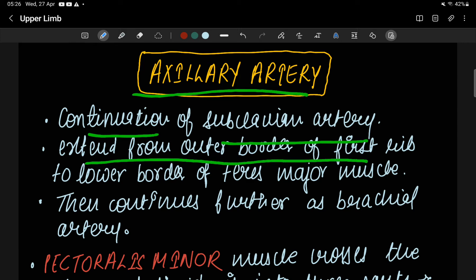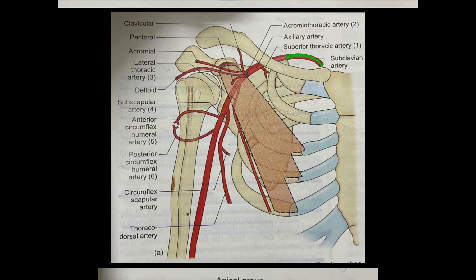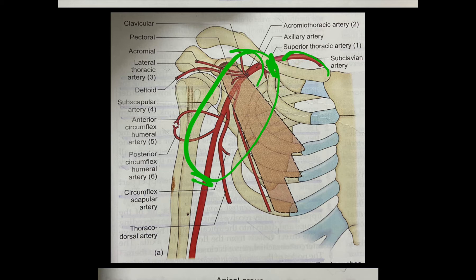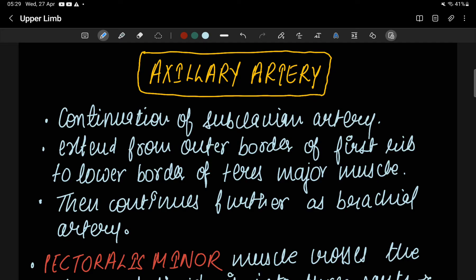It extends from the outer border of the first rib to the lower border of teres major muscle. As you can see in this diagram, this is the subclavian artery — after that it continues down as the axillary artery. After the lower border of teres major muscle, it continues as the brachial artery.